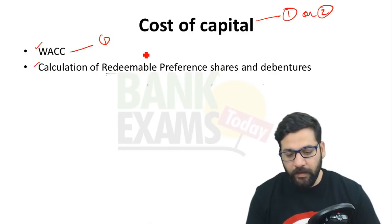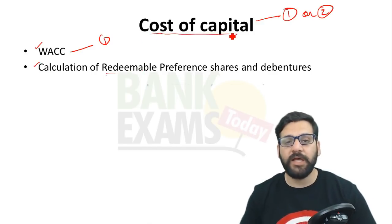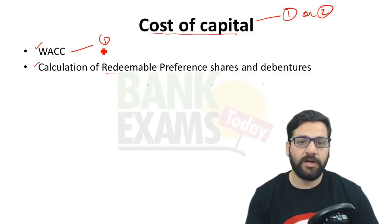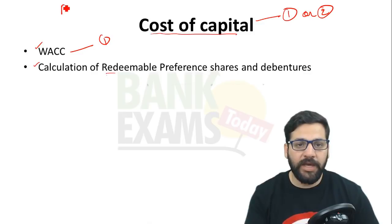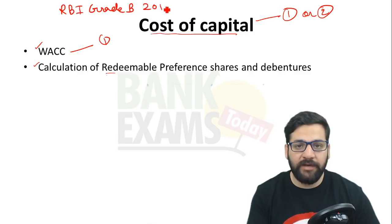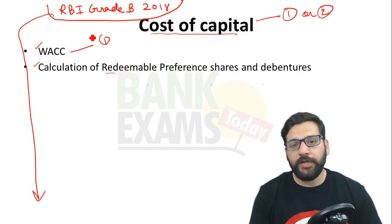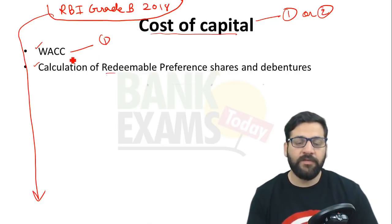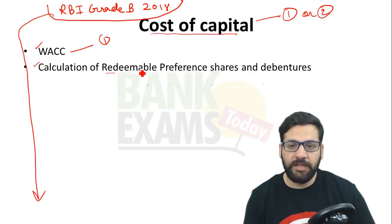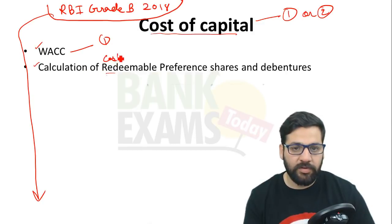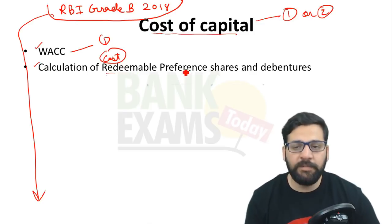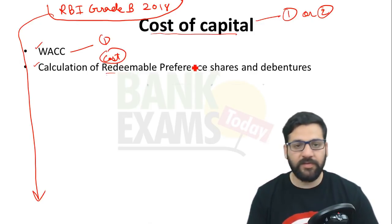I have already covered this lecture in my RBI Grade B course. I recommend you go to BankExamStudy.com and look at the RBI Grade B 2018 course, in which I have taught all these topics. The important topics from the Cost of Capital chapter are: Weighted Average Cost of Capital, calculation of cost of redeemable preferentials, and cost of debentures. This is an important topic.